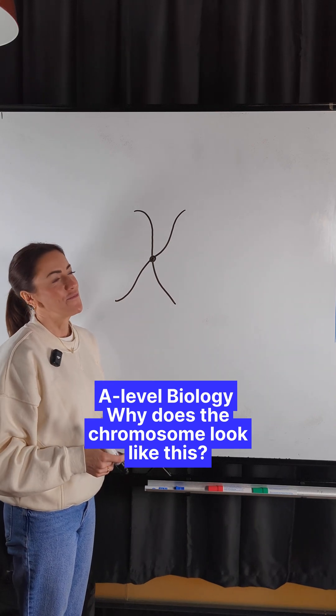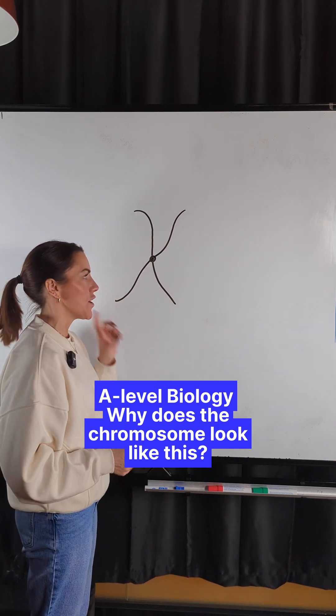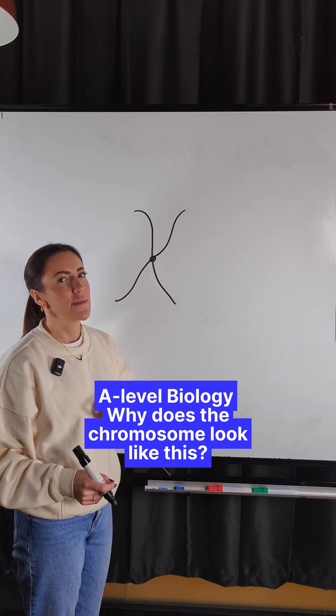This is a chromosome. But why does this chromosome look like this? Let me explain.